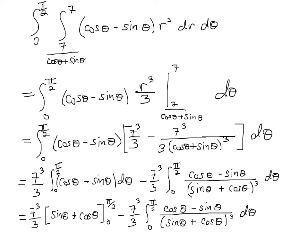Before integrating with respect to θ, I clean up the integral. I factor out 7³/3 and break the integral into two parts. The first part involves 7³/3 times the integral of (cosθ − sinθ), and the second part is minus 7³/3 times (cosθ − sinθ) divided by (sinθ + cosθ)³. I rewrite cosθ + sinθ as sinθ + cosθ to prepare for what follows.